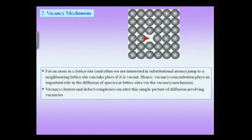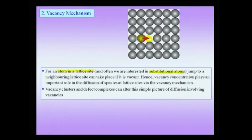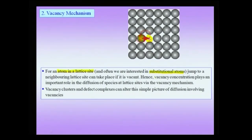A lattice atom can only jump to a neighboring site if that neighboring position is vacant. Considering an atom marked in blue, its jump to a neighboring site can only take place if the neighboring site is vacant. This implies that the basic mechanism giving rise to diffusion of a substitutional atom is the vacancy mechanism, in which a jump from site A to site B is equivalent to the vacancy jumping from site B to site A.